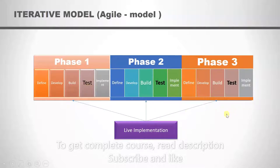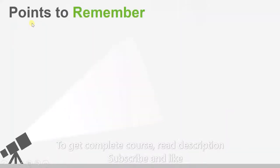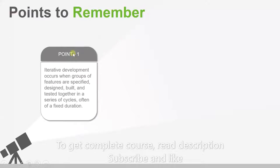Now let's go over a few key points that you should remember. Point one: Iterative development occurs when groups of features are specified, designed, built, and tested together. So you will have some requirements that will be designed, built, and tested together in a series of cycles. As you saw, we tested the requirements repeatedly in one phase after another, often of a fixed duration like we had a fixed duration of one week for each phase.